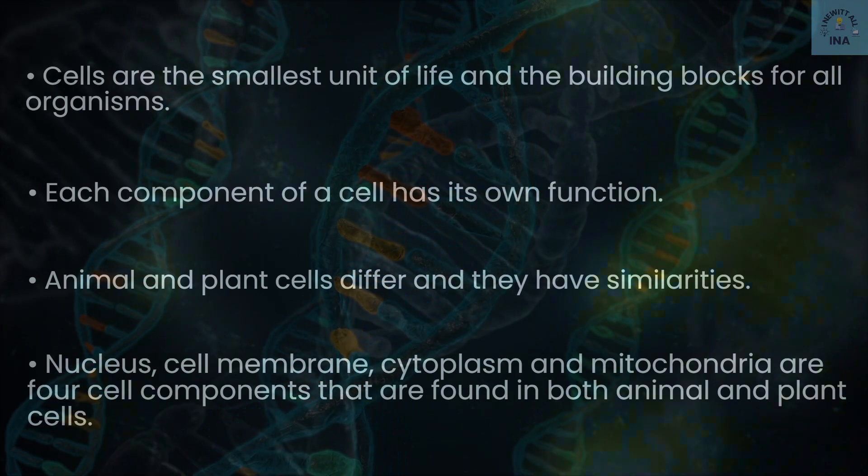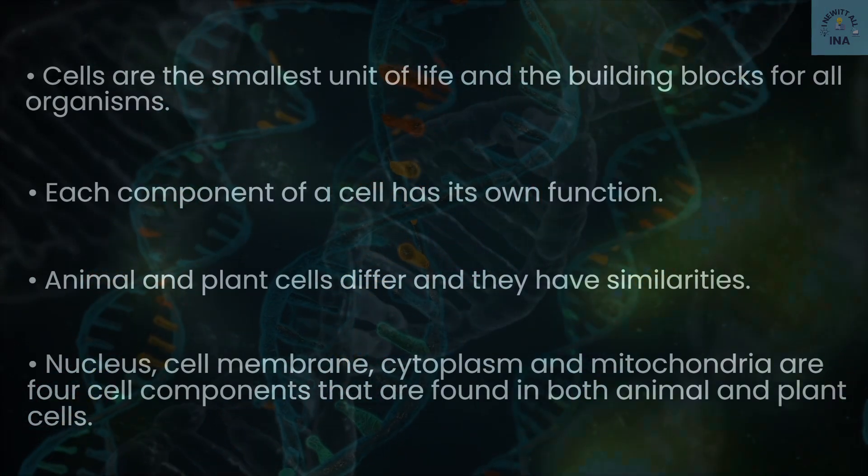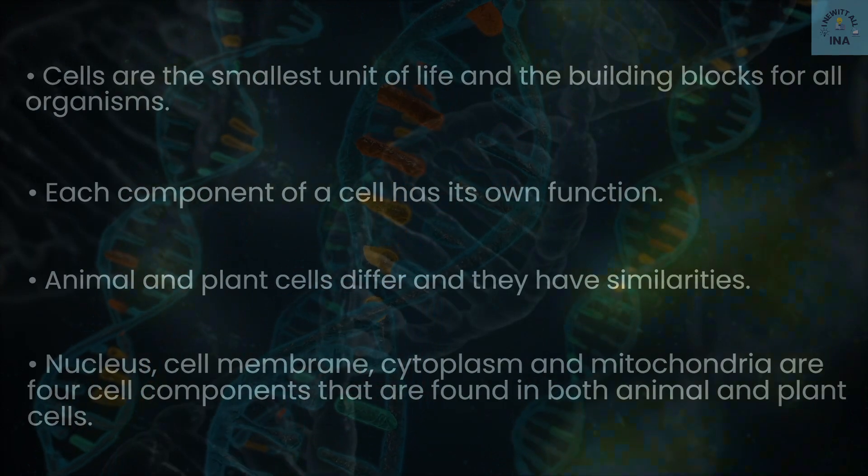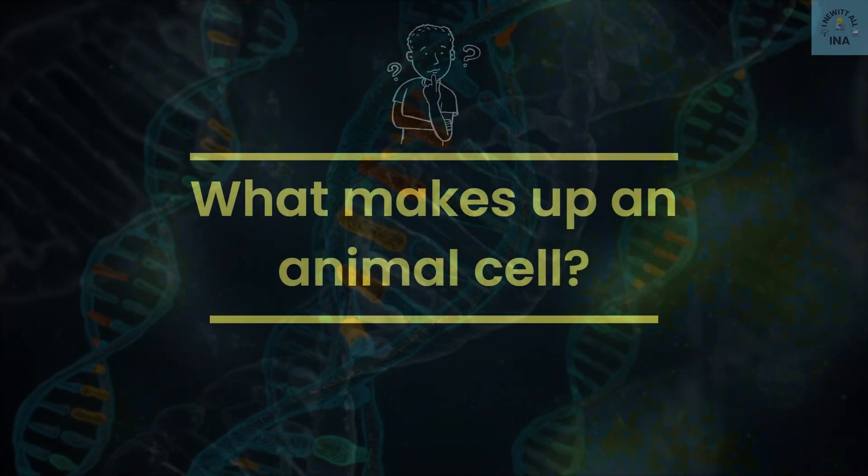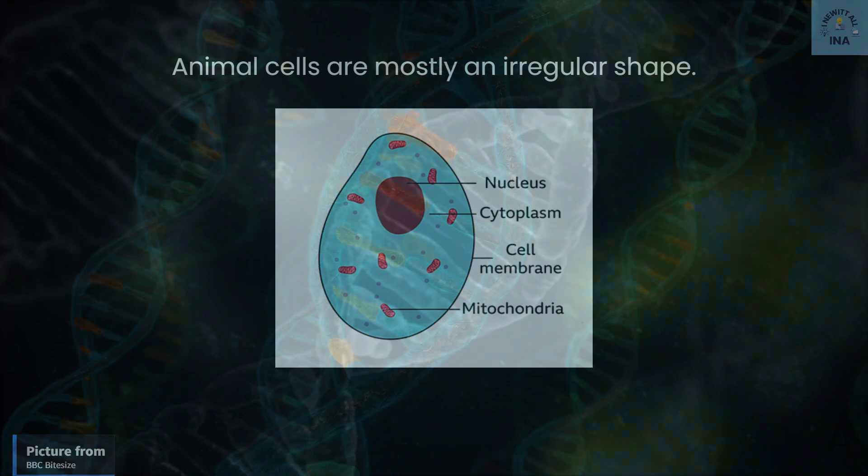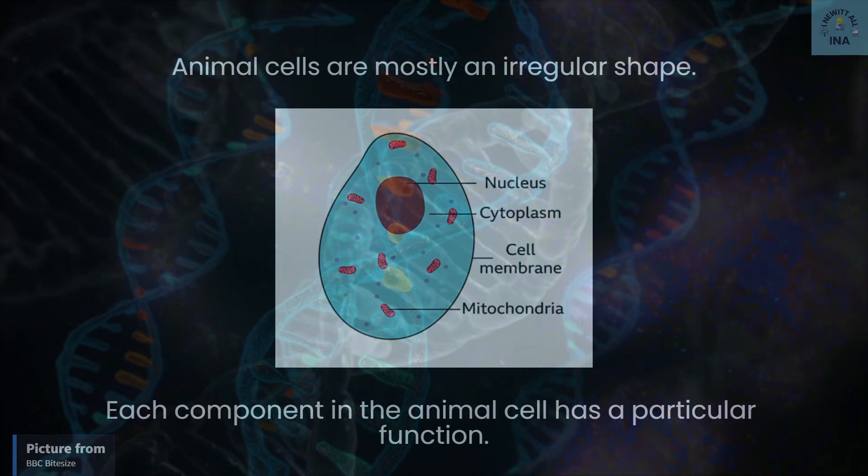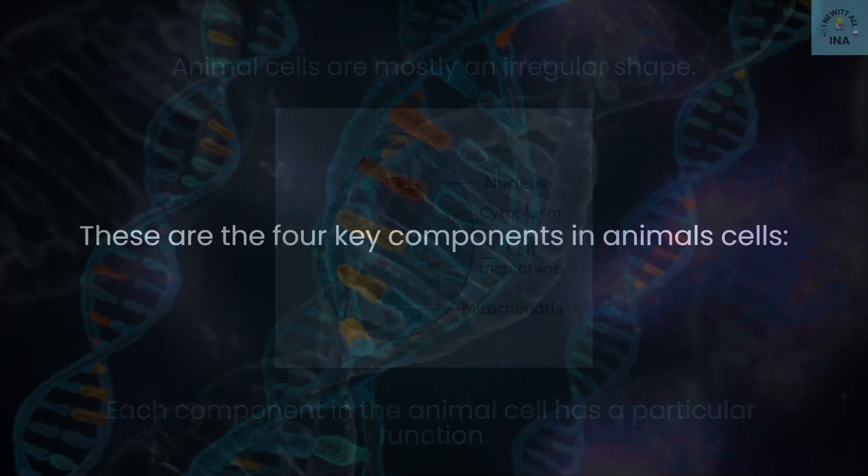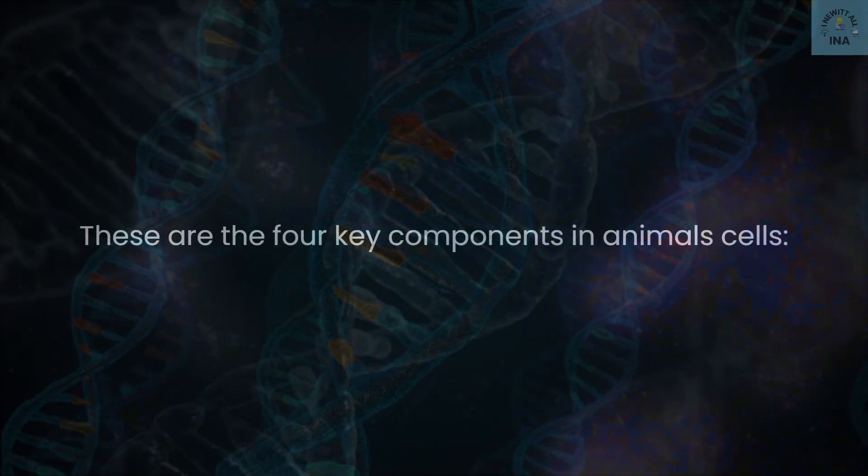Nucleus, cell membrane, cytoplasm, and mitochondria are four components that are found in both animal and plant cells. What makes up an animal cell? Animal cells are mostly an irregular shape. Each component in the animal cell has a particular function. These are the four key components in animal cells.